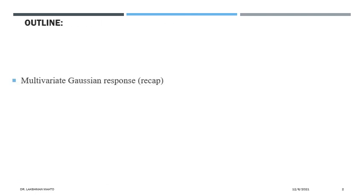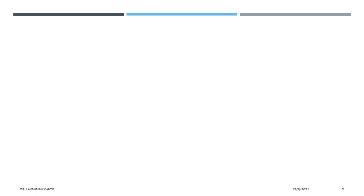Coming to the outline of today's lecture, I would like to first give a recap of multivariate Gaussian response. You need to be very good at understanding multivariate Gaussian distribution — keep mastering it. Afterward I will discuss multivariate regression in detail and how we can formulate multivariate regression in the framework of multiple regression. When we say multiple regression, the response is a response variable, not a response vector — that means we are talking about a univariate linear model.